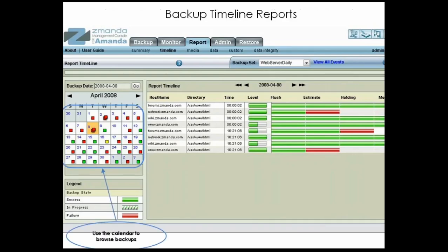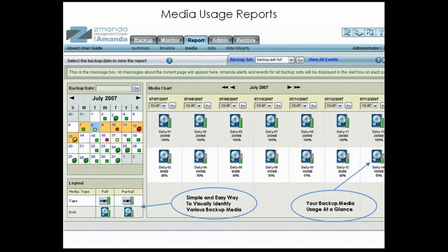For each client, you can see the host name, the file system backed up, the time elapsed for the backup, and the data flow from the client to the server. This allows you to ensure that all clients were backed up, data was successfully dumped to the AMANDA Enterprise server, and data was successfully spooled to the media. The media report provides a view into how your media is being used, regardless of what kind of media you are using to store backups. Like on the summary report, you can use the calendar to easily browse back to view historical report data.